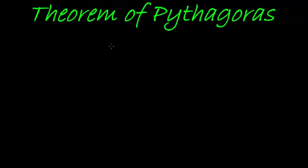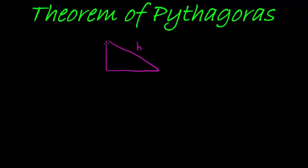The Theorem of Pythagoras is a way to calculate the length of the hypotenuse — the length of the hypotenuse given the length of the two right angle sides.